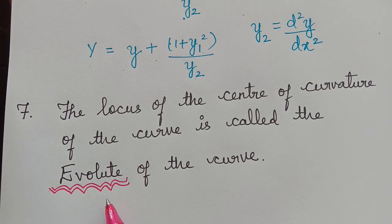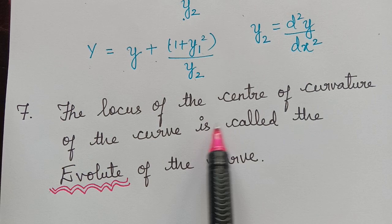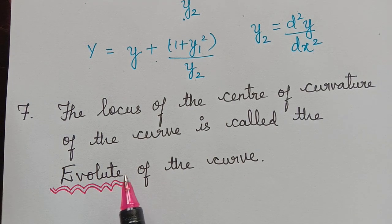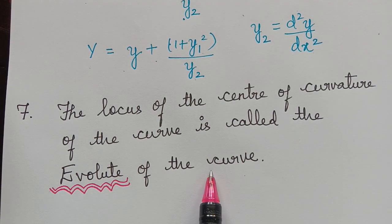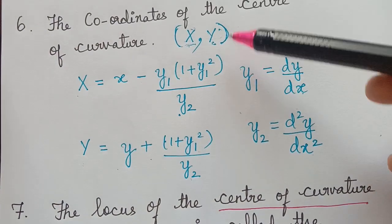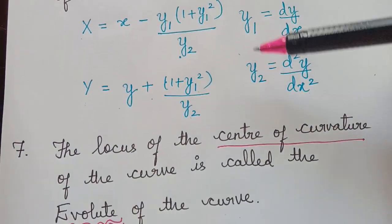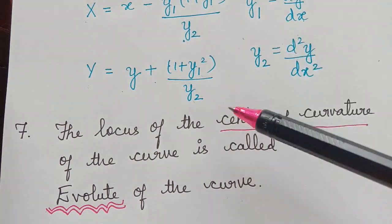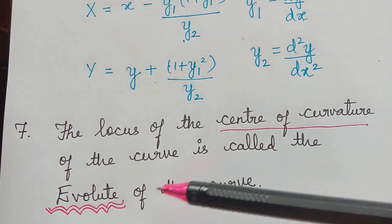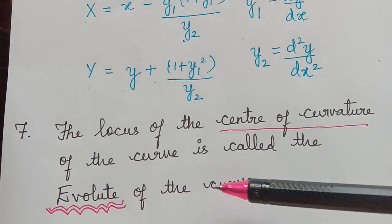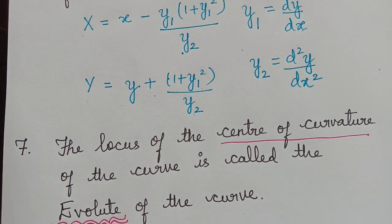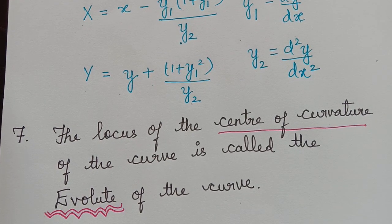The locus of the center of curvature of a curve is called the evolute of the curve. To find the evolute, first find the center of curvature using the formulas above, then combine X and Y so that their locus forms the evolute. Hope you have learned all the formulas under the topic radius of curvature. Thank you.